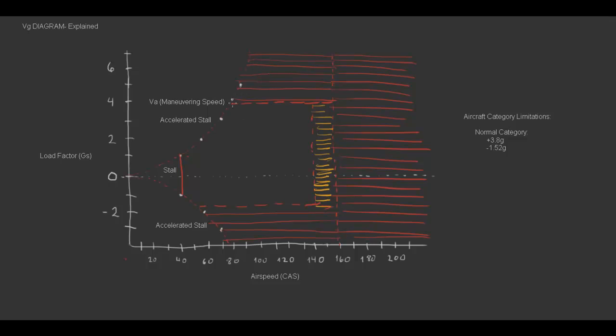Something else I'll point out is that at the intersection between the category limitation of 3.8 and our accelerated stall speed is where we get our maneuvering speed. There will be another video explaining VA speed more in depth. But it's this airspeed that we want to understand, because in certain situations, we want the airplane to stall before there is structural damage done to the airplane.